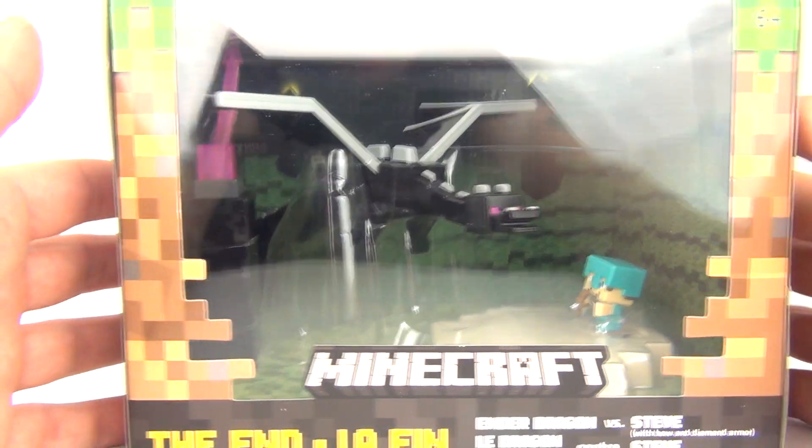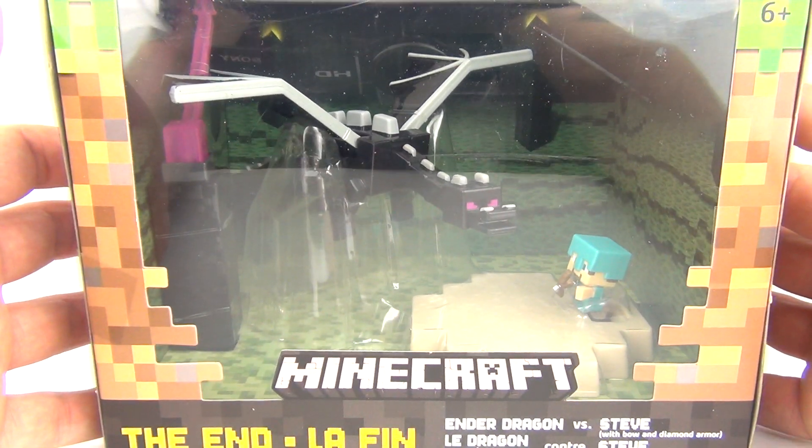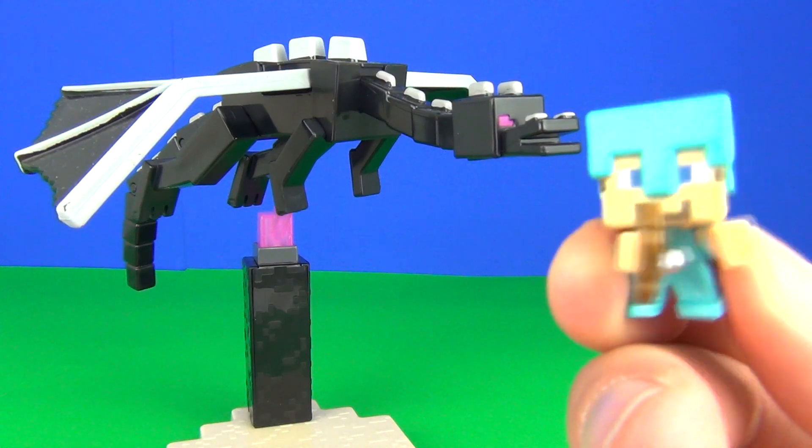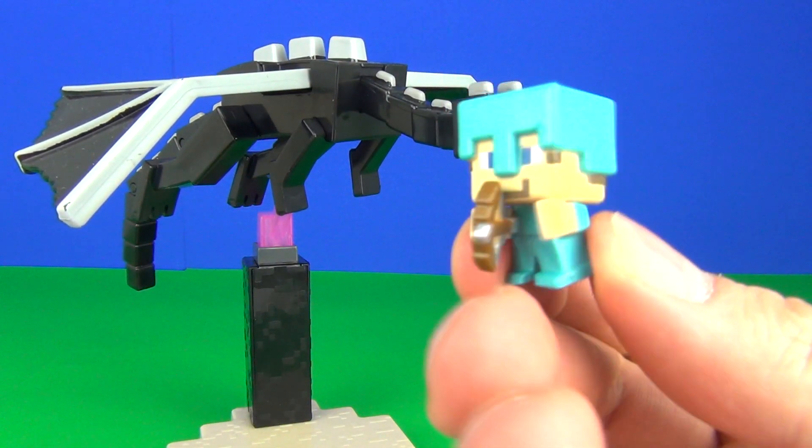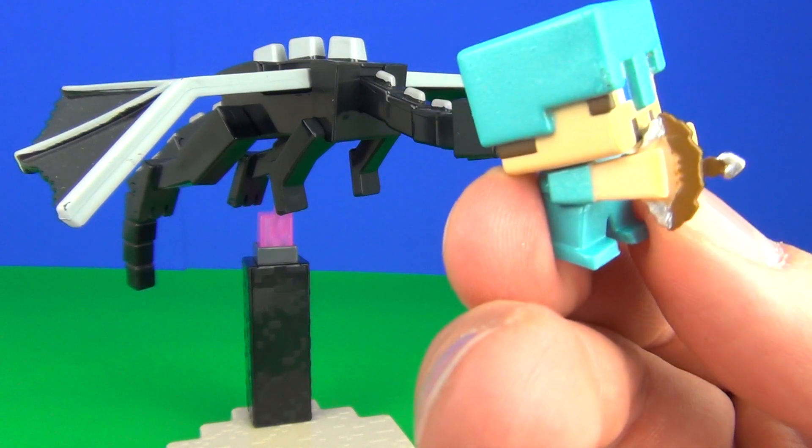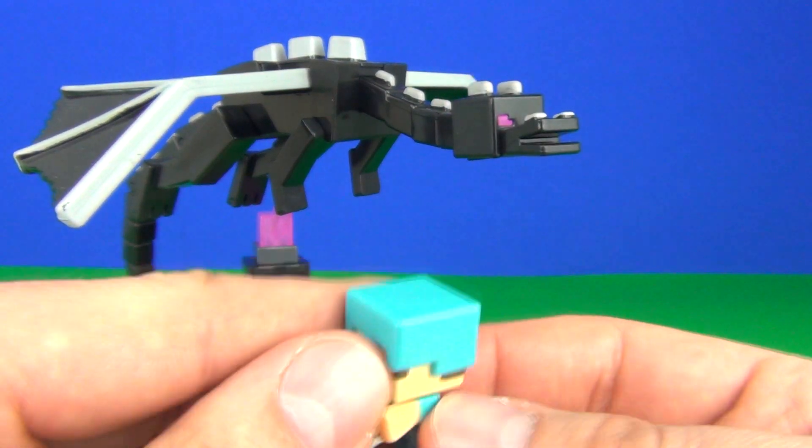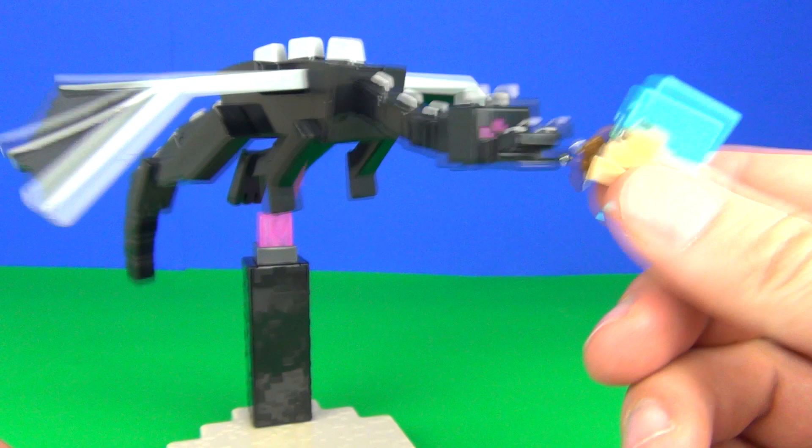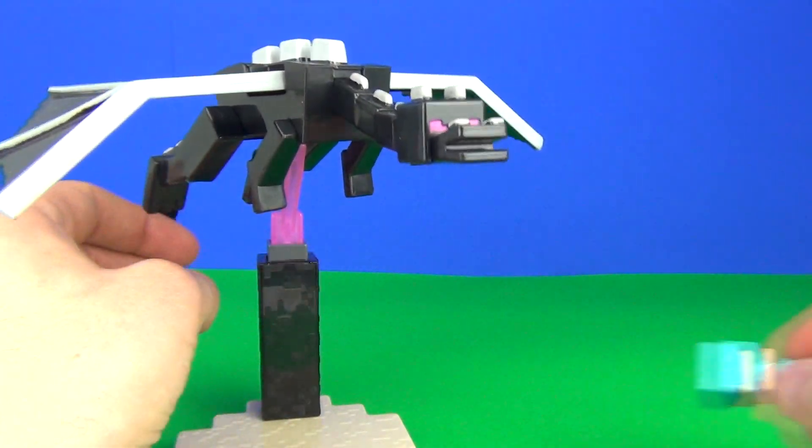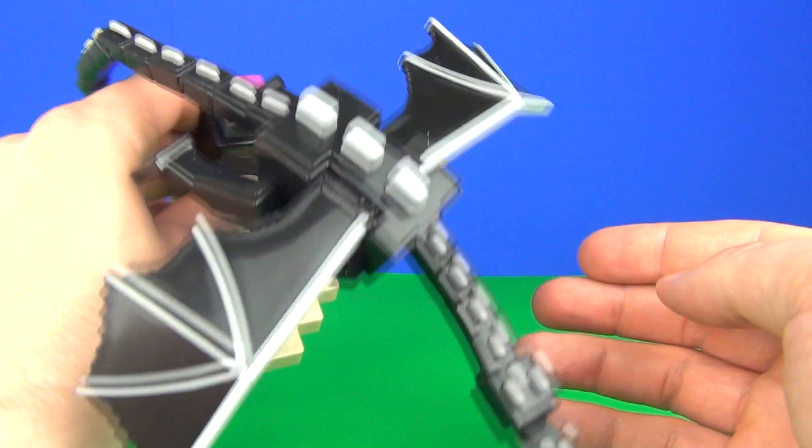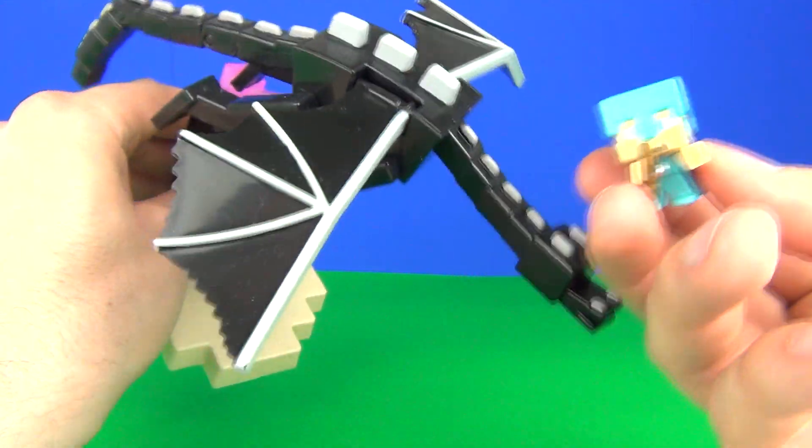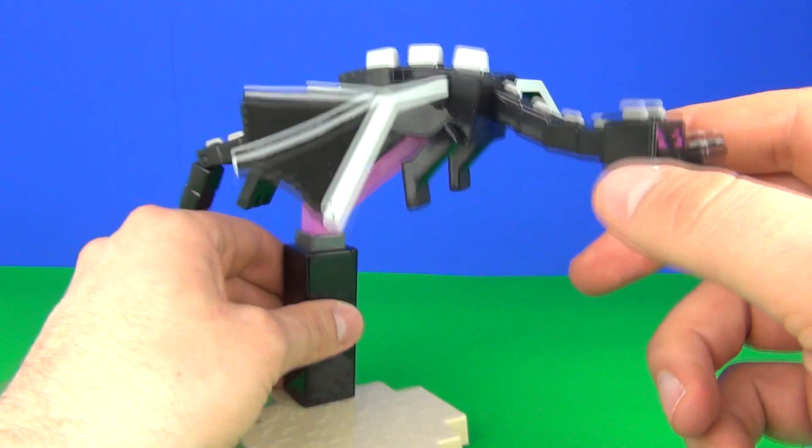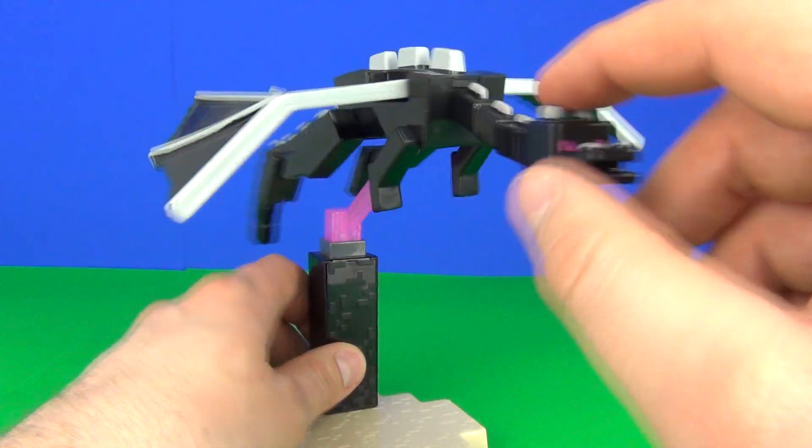Let's open this up and take a closer look. Here we go guys, the Ender Dragon and Steve—how cool do these look! Steve does come with his diamond armor and his little crossbow there, ready to take out the dragon in the end. The Ender Dragon is really cool. I love this. Look how big it is in comparison to Steve—it's such a very cool figure.